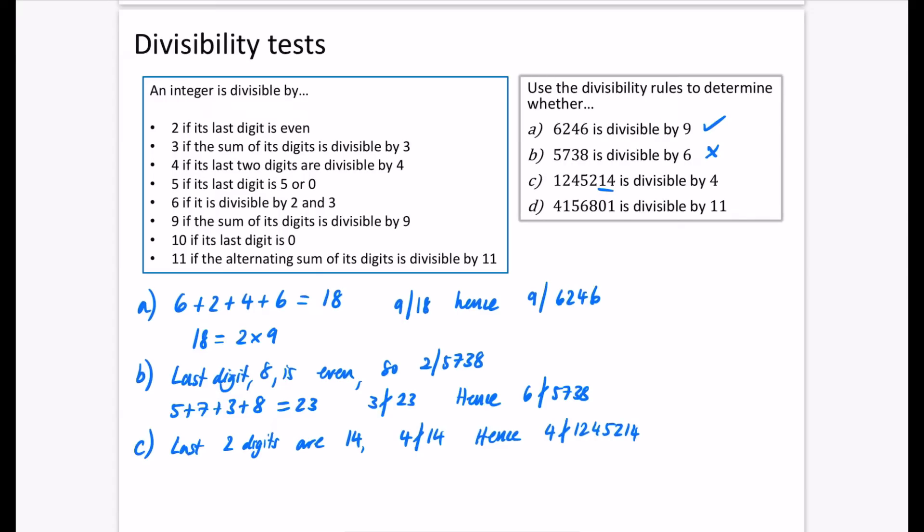I'm actually going to double check this one as well. 5,738 divided by 6. Nope, it doesn't. It has a remainder of 1. And 1,245,214, do you think it's going to have a remainder of 2, a remainder of 1 or 3? Of course, it's going to have a remainder of 2 because it is still an even number. So if 4 is not a divisor of this, if 4 is not a factor, but it's even, obviously there has to be a remainder of 2.